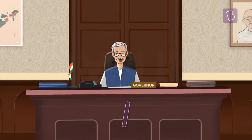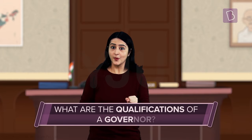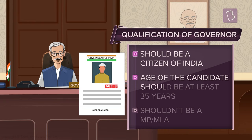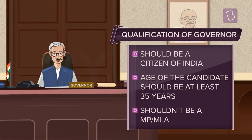What should be the qualification of a person considered for the post of a governor? One, he should be a citizen of India. Two, he should have completed 35 years of age. And three, he should not be a member of parliament or a member of any state legislative assembly.